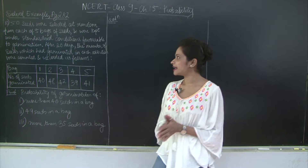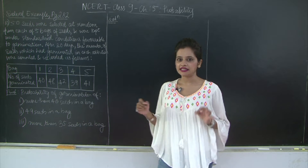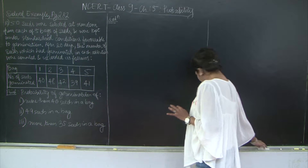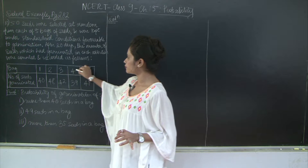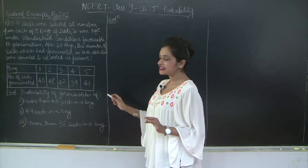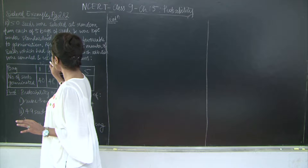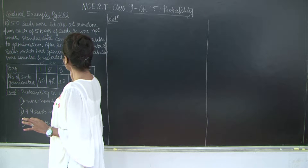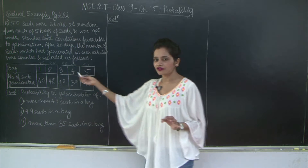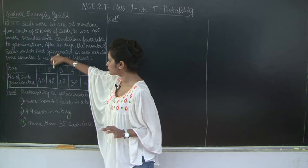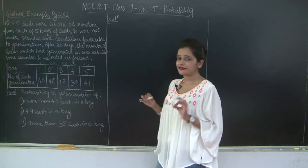It states that 50 seeds were selected at random from each of five bags of seeds — bag 1, bag 2, bag 3, bag 4, and bag 5. So initially there were 50 seeds placed in each of these bags: bag 1 had 50 seeds, bag 2 had 50, bag 3 had 50, bag 4 had 50, and bag 5 had 50 seeds.